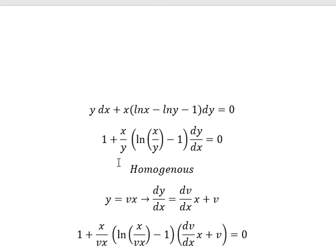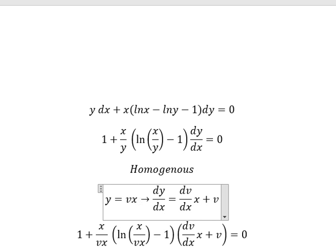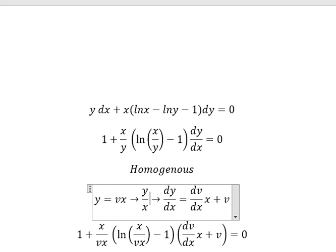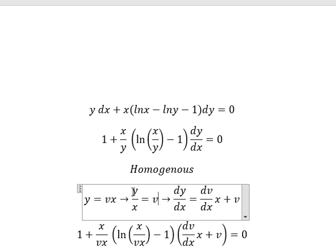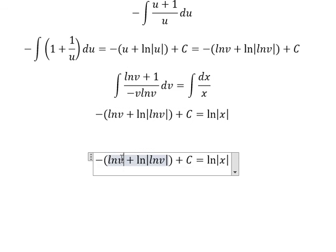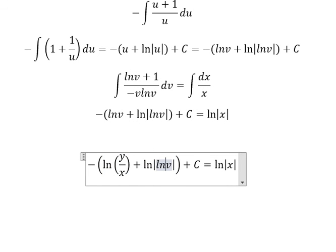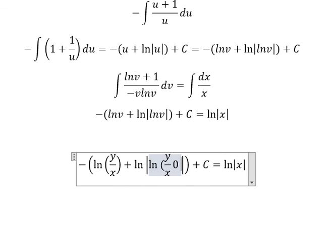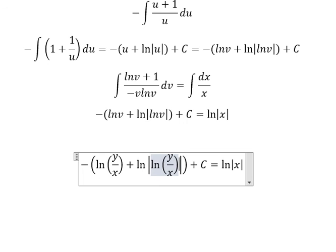We know that v equals y over s, so we divide both sides by s and substitute v equals y over s. This is the final answer.